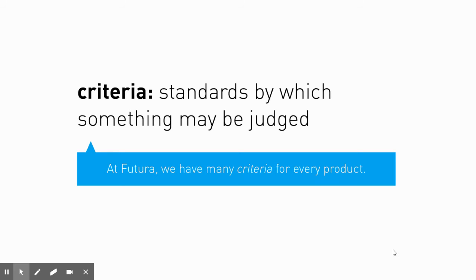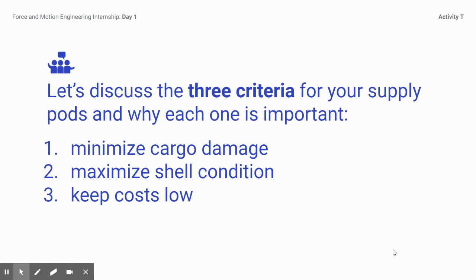So criteria is something by which we may be judged. While we are making this project, we're going to look at certain criteria that Nisha just introduced. Three criteria that are very important are to minimize cargo damage, maximize shell condition, and to keep costs low.